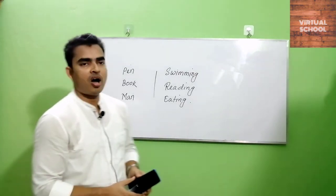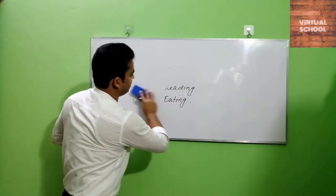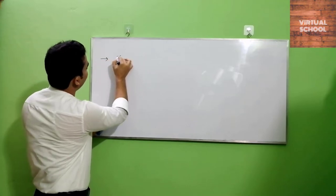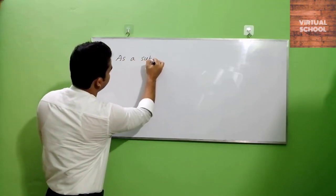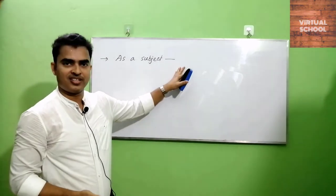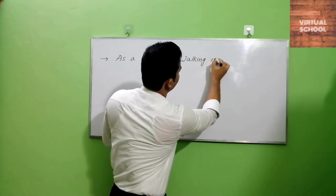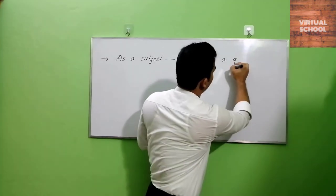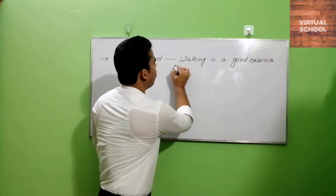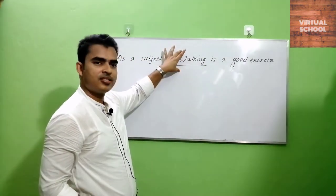Now we can see the position of gerund — where a gerund is used in a sentence. First, as a subject: a gerund can be used as a subject in a sentence. Such as 'Walking is good exercise.' Here, walking is the subject in the sentence, and this is a gerund.